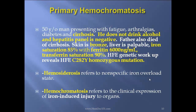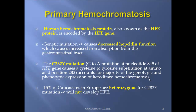Hemosiderosis refers to a nonspecific iron overload state. Hemochromatosis refers to the clinical expression of iron-induced injury to organs. The human hemochromatosis protein, also known as the HFE protein, is encoded by the HFE gene. Genetic mutation causes decreased HFE function, which causes increased iron absorption from the gastrointestinal tract. The C282Y mutation — a G-to-A mutation at nucleotide 845 of the HFE gene — causes a cysteine to tyrosine substitution at amino acid position 282, and accounts for the majority of the genetic and phenotypic expression of hereditary hemochromatosis.